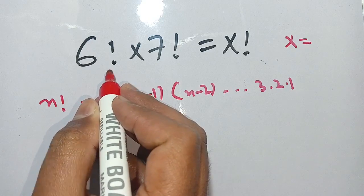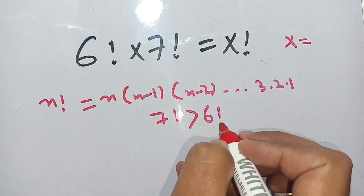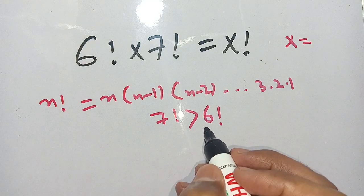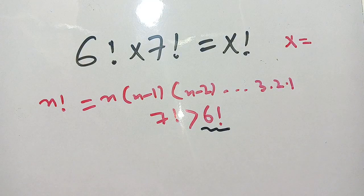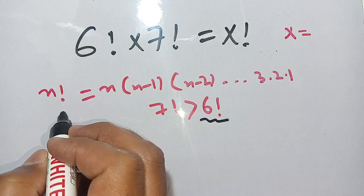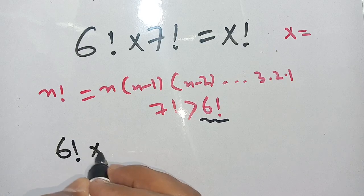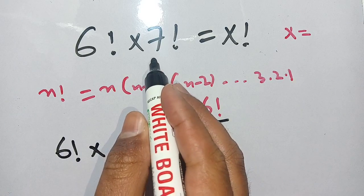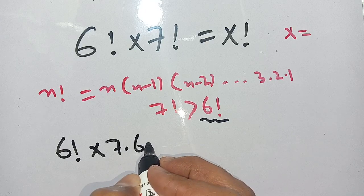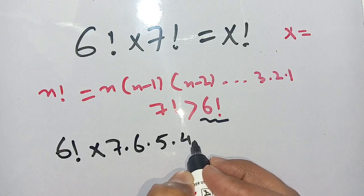We use this definition of n factorial. Since 7 factorial is greater than 6 factorial, we keep 6 factorial as it is and we open 7 factorial, applying the definition of n factorial.